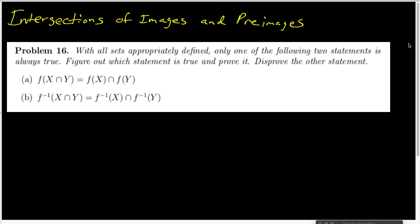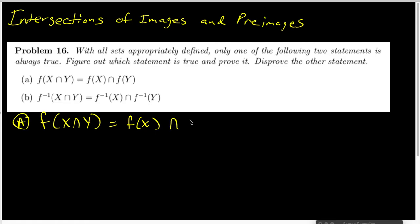In this problem, we are asked to determine which of these two statements is true and which is false, and then prove our answers are correct. It turns out that the first statement — that the image of X intersect Y is equal to the intersection of the image of X and the image of Y — is false.